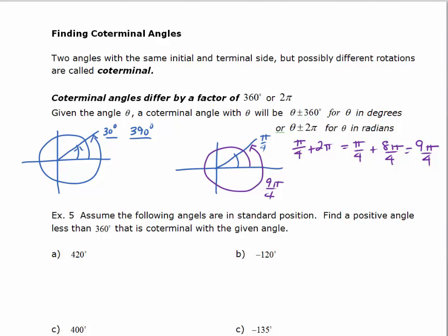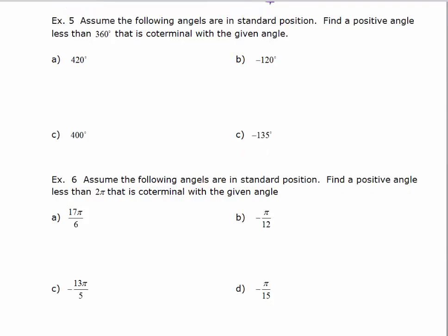Let's look at Example 5. It says: assume the following angles are in standard position, find a positive angle less than 360 degrees that is coterminal with each angle. To find a coterminal angle, you add or subtract multiples of 360. For 420 degrees, I subtract 360 degrees, which gives me 60 degrees — a positive angle coterminal with the given angle.